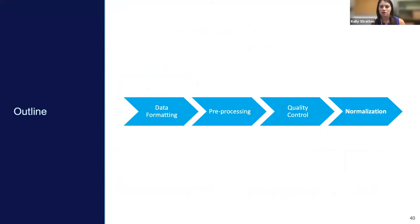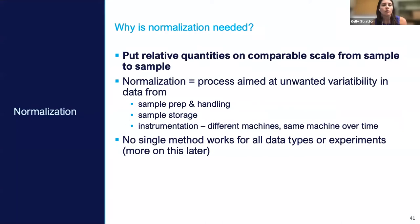The last topic for this talk is normalization. Normalization means putting relative quantities from the mass spec onto comparable scales from sample to sample so we can make downstream statistical comparisons. Normalization is the process of removing or trying to remove unwanted or unintended variability in our data that can come from sample processing, storage, or properties inherent to the samples.